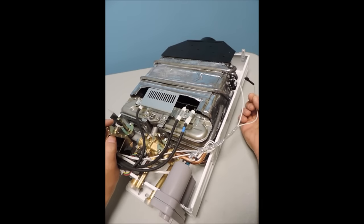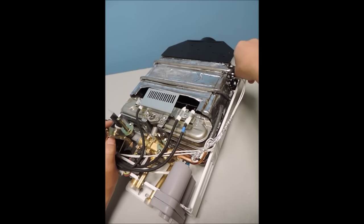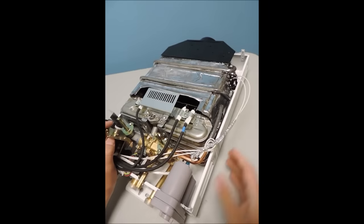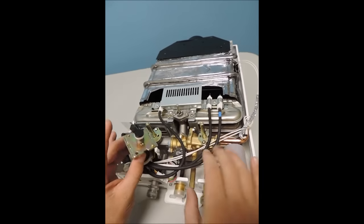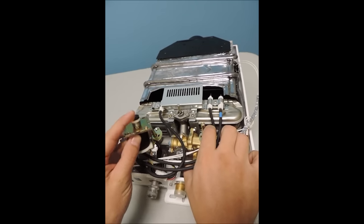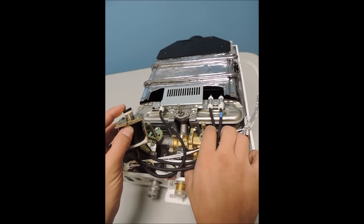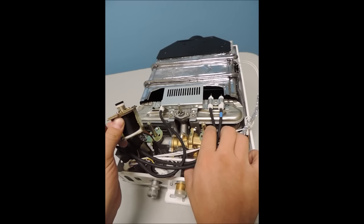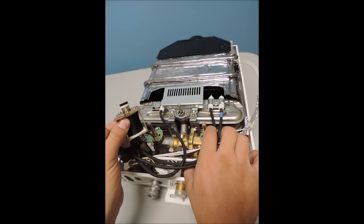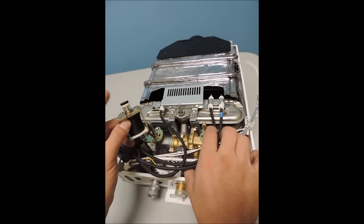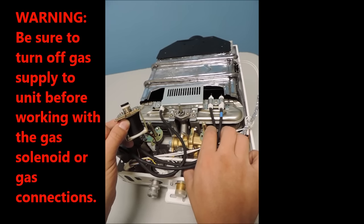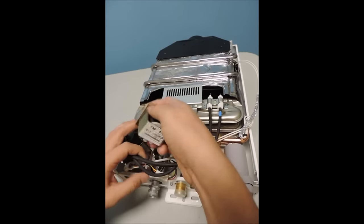If this is the case, then confirm all electrical connections are firmly connected, especially the black clip connecting the solenoid and also the connections on the overheat protection sensor. Here we have shown the action of the plunger by removing the solenoid, but we do not recommend that you remove the gas solenoid unless you believe, based on the test, that it is not functioning properly and needs to be replaced.